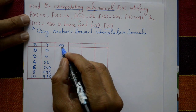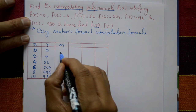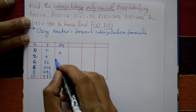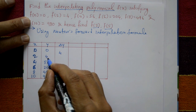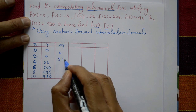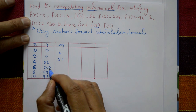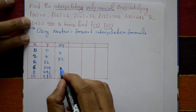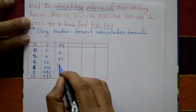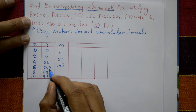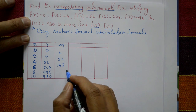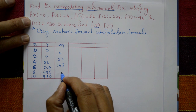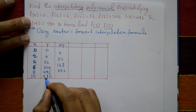First forward differences: 4 − 0 = 4, 56 − 4 = 52, 204 − 56 = 148, 496 − 204 = 292.